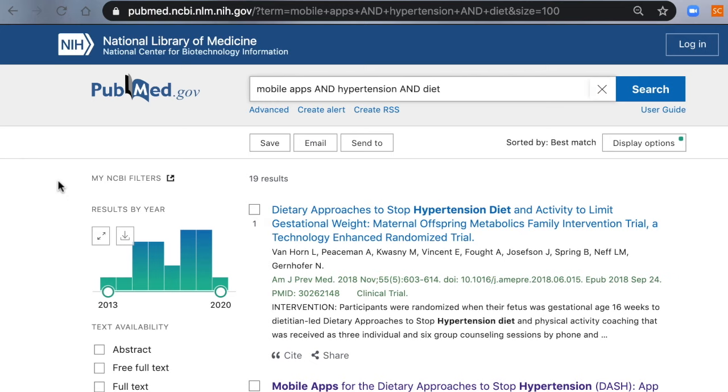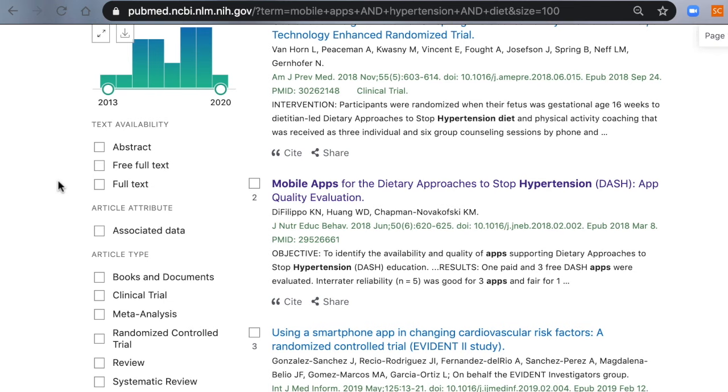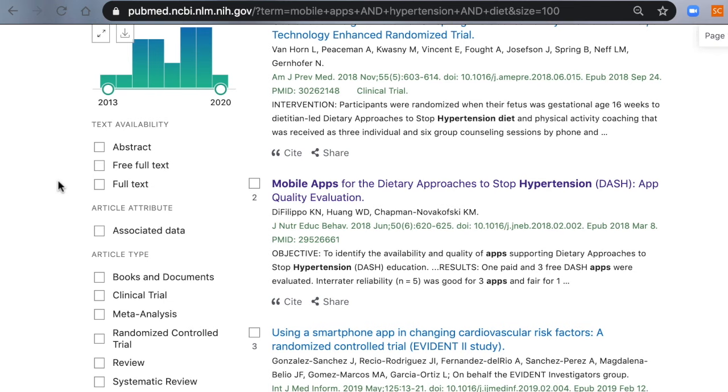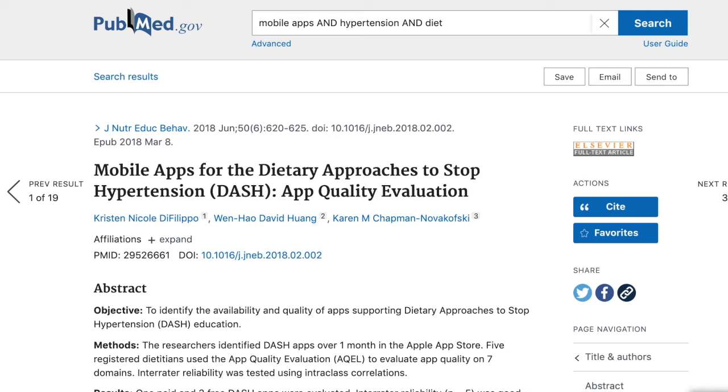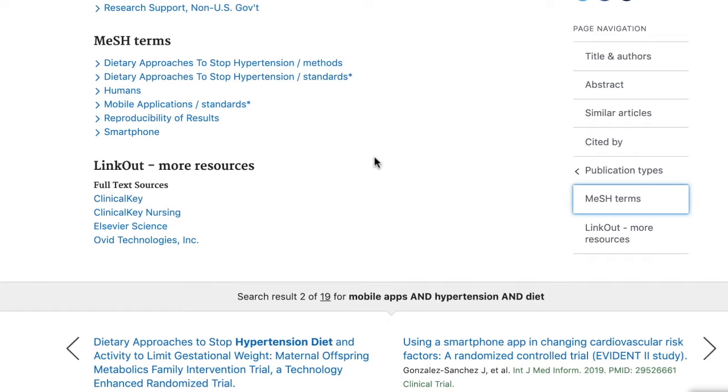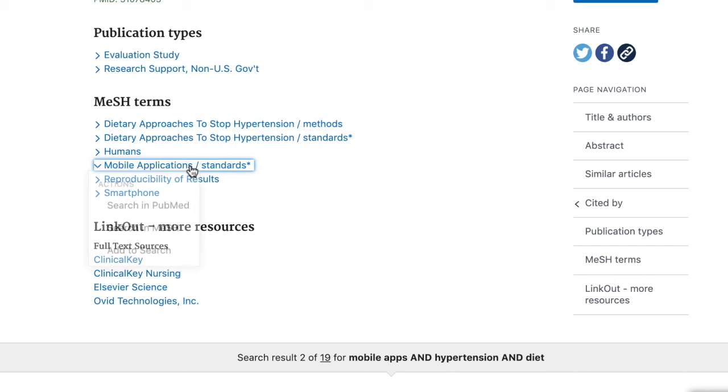There are several ways to identify relevant MeSH for your research question. First, if you found an on-topic article in PubMed and it's indexed in Medline, such as this one titled Mobile Apps for the Dietary Approaches to Stop Hypertension, click on the citation's title. Next, scroll to the right-hand side menu bar and click on MeSH. This will take you to a listing of the article's MeSH. If you see a heading that looks appropriate, click on the term and then the Search in MeSH link.